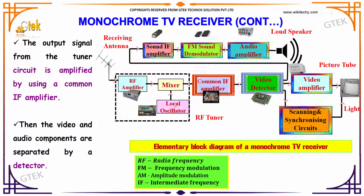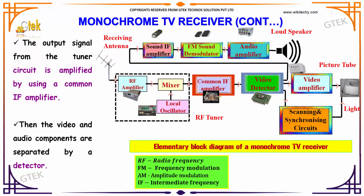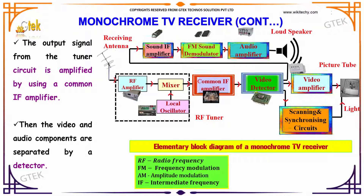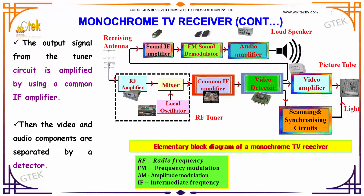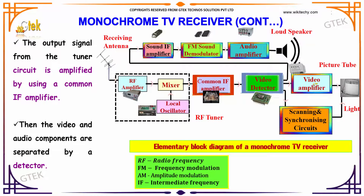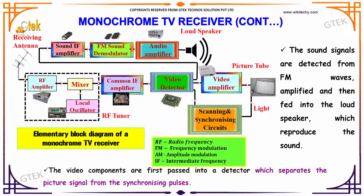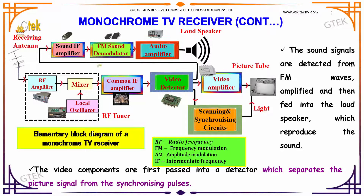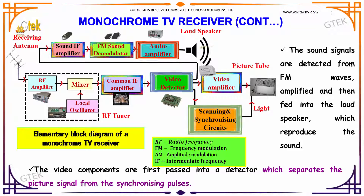The output signal from the tuner circuit is amplified by using a common IF amplifier. Then the radio and audio components are separated using the detector — audio signals go one path and the video signals are amplified separately. The sound signals are detected from FM waves, amplified, and then fed into the loudspeaker, which reproduces the sound.